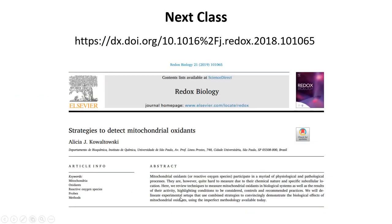Those are the things I wanted to tell you about measurements in intact cells. For next class, we're going to talk about measurements of mitochondrial oxidants and antioxidants — something many people are interested in measuring regarding mitochondrial reactive oxygen species. As reading material, I recommend a review I wrote in Redox Biology; it's an open access 2019 review, and that will be the reading for the next class in addition to the videos I'm going to make. Bye until then.